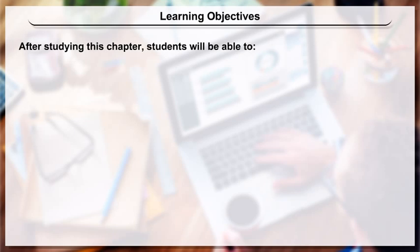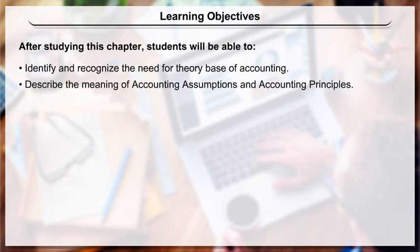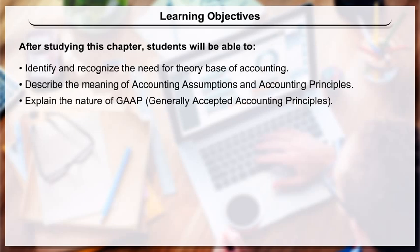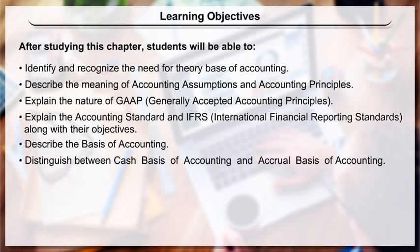Learning Objectives: After studying this chapter, students will be able to identify and recognize the need for theory base of accounting, describe the meaning of accounting assumptions and accounting principles, explain the nature of GAAP (generally accepted accounting principles), explain the accounting standards and IFRS (International Financial Reporting Standards) along with their objectives, describe the basis of accounting, and distinguish between cash basis and accrual basis of accounting.